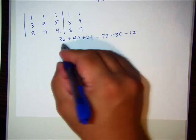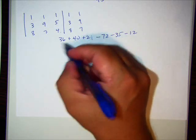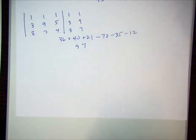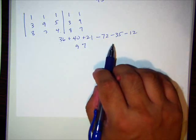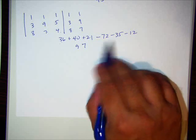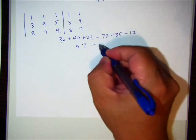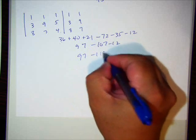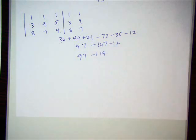here, 76, 76 plus 21 is 97. Is that right? Minus 72, minus 35, minus 107, minus 12. Yeah, sorry. I'm not using the calculator. What is that? Negative 22. Okay. Sorry if my mumbling is distracting. You can work it out.